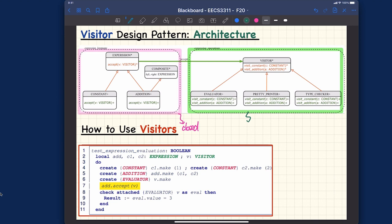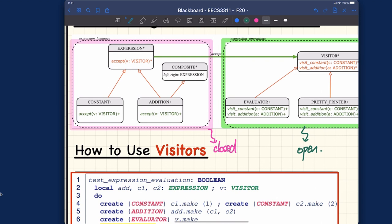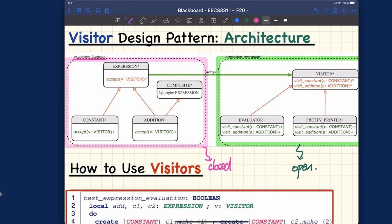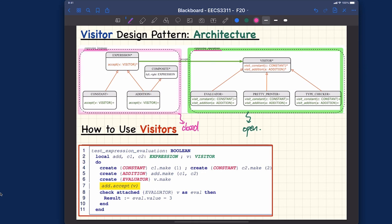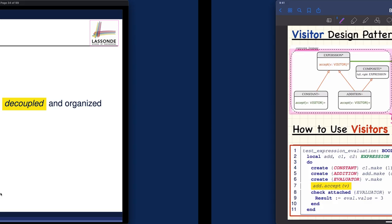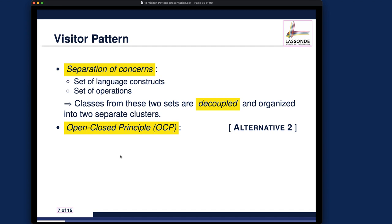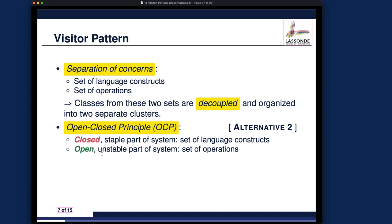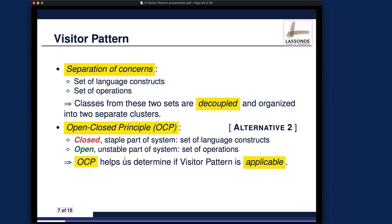This part over here is closed, whereas the other cluster — about the operations — is open. So we are really satisfying the open-close principle. If you look more closely, we have the expression language structure on one side and the expression operations on the other end. The slides simply say we satisfy the open-close principle: closed for the language constructs and open for the operations.